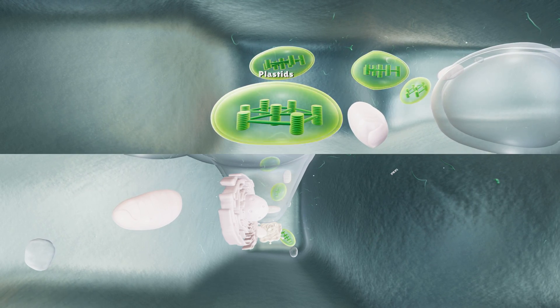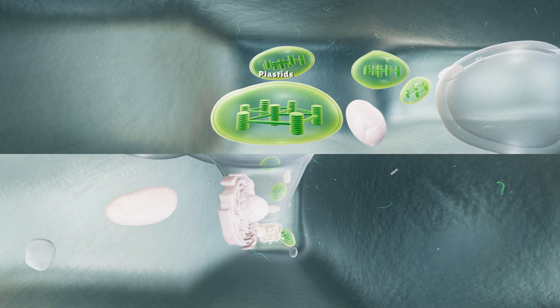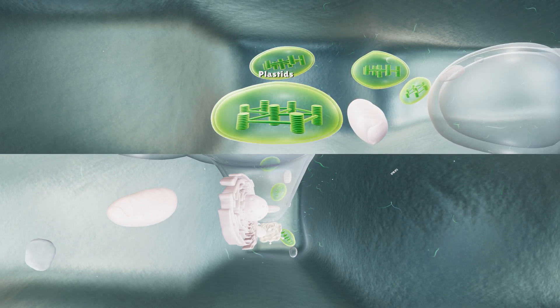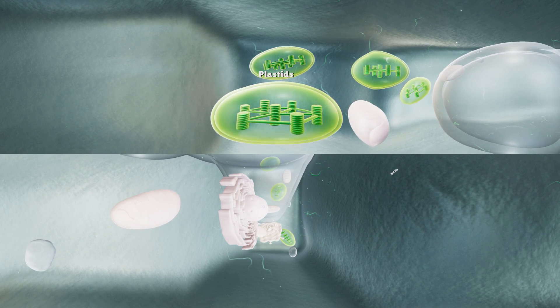Some other types of plastids are amyloplasts, which store starch, ileoplasts, which store fat, and chromoplasts, which synthesize and store pigments.